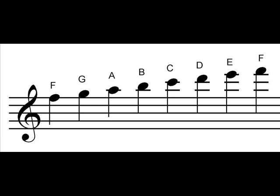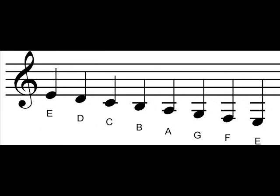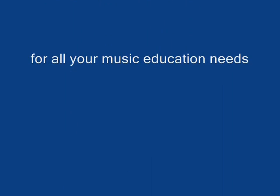Notice that the order in which notes are added alternates between lines and spaces. Notes below the staff are added alphabetically, going down the musical alphabet. Notice that when the letter A is reached, the next note will be the letter G, then F, and so on.